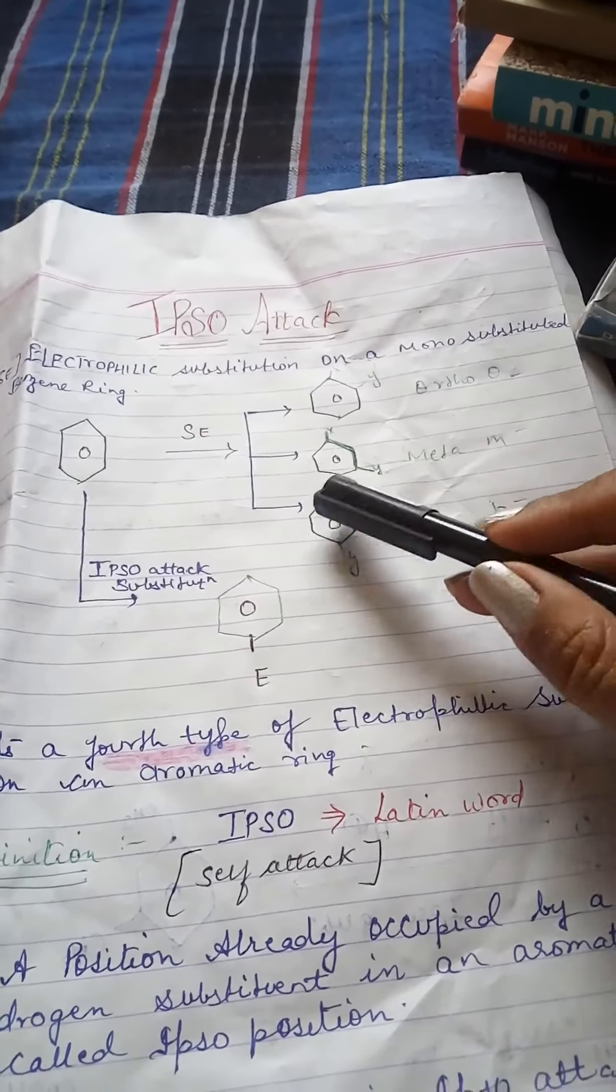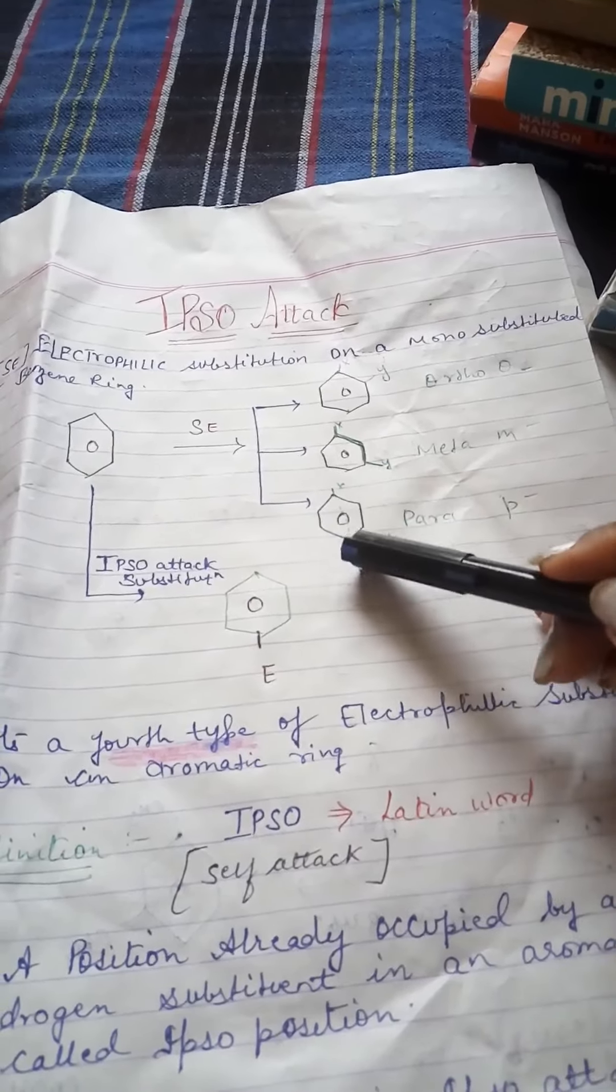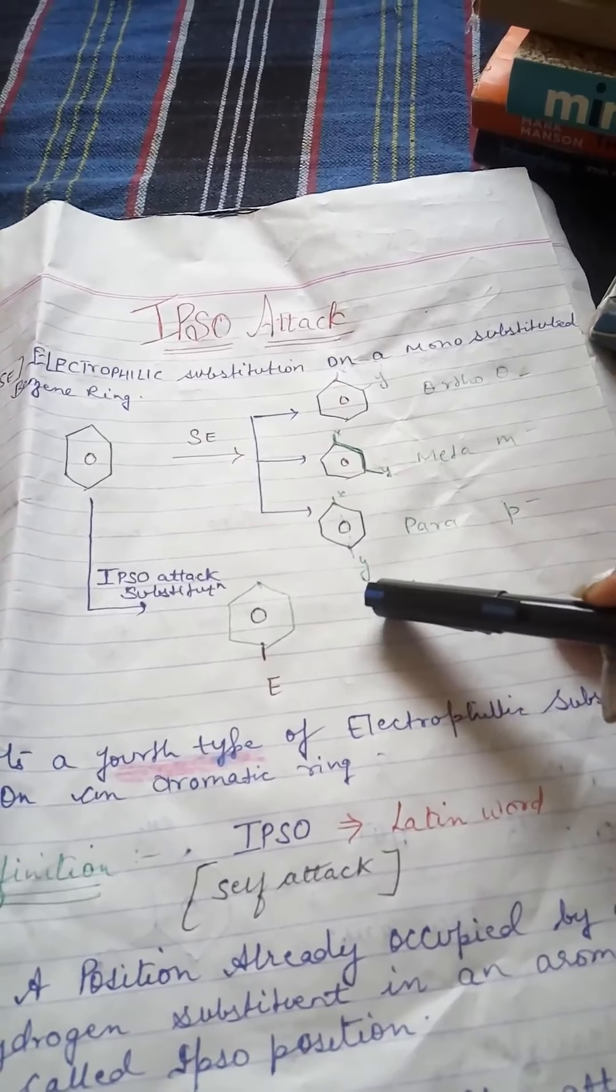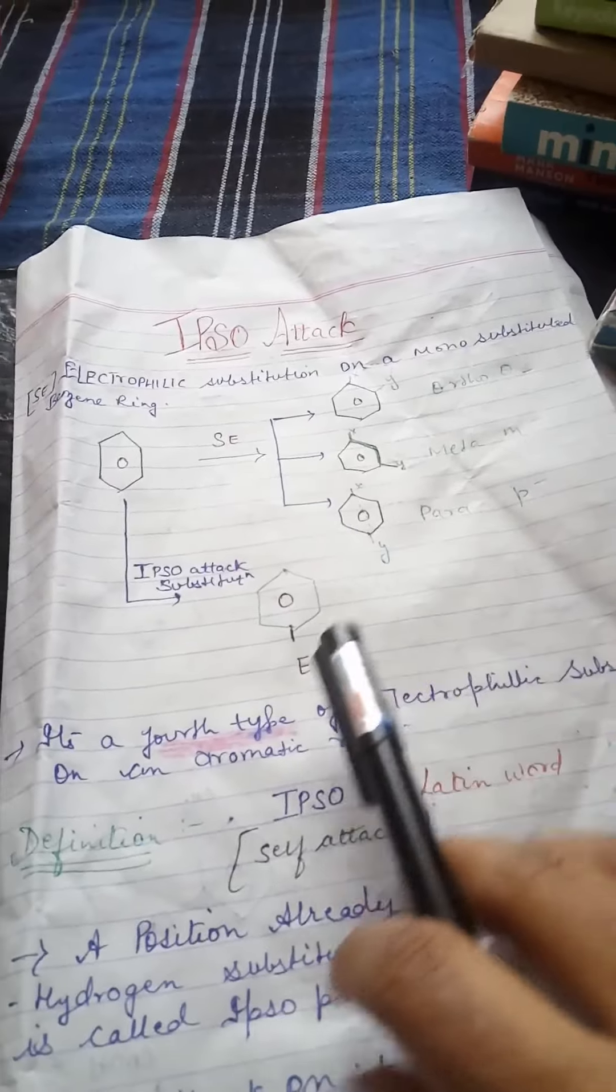Then, para position is 1, 4. This is P shape. This is P shape.